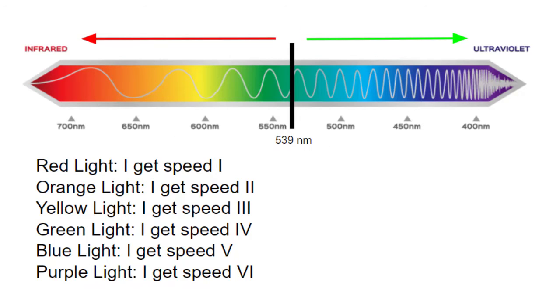I have also listed the levels of speed I will get for each color. The levels of speed keep increasing as the color goes from red to purple to show the increase in the amount of energy electrons get from these colors.